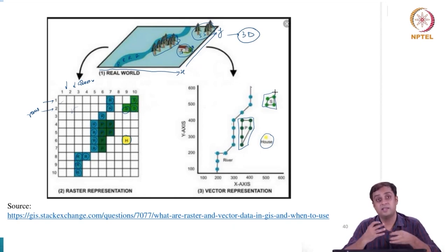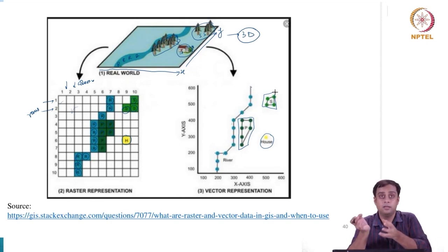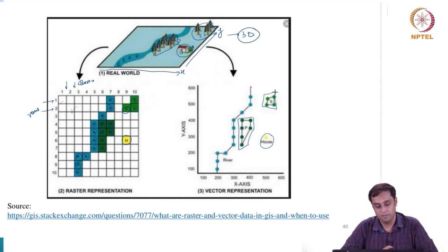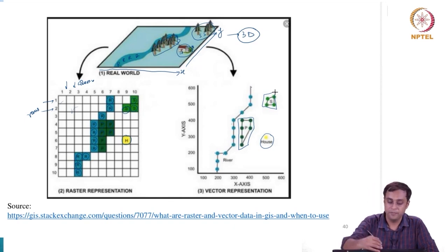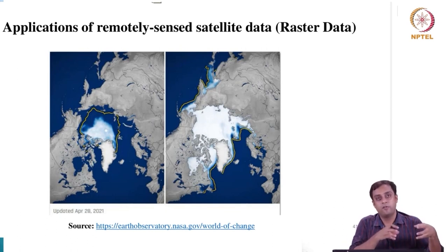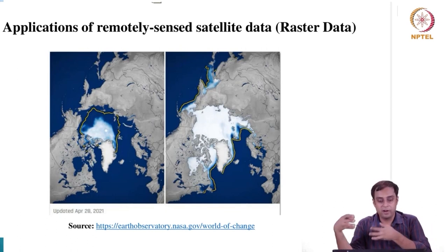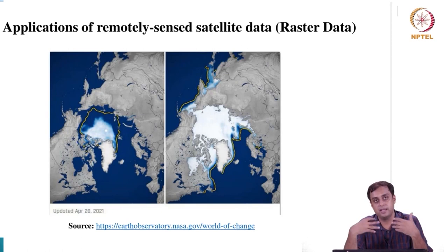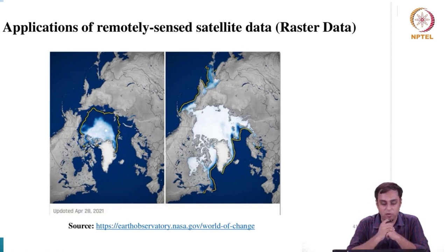Having now understood in detail how raster data format works versus vector data format, we will quickly go over some of the applications we come across in raster as well as vector format. The examples we have seen previously will also apply to this classification, and we look at applications of remotely sensed or spatially delineated data sets in both formats.